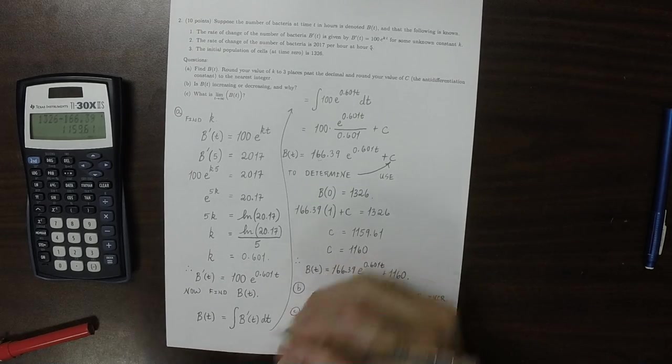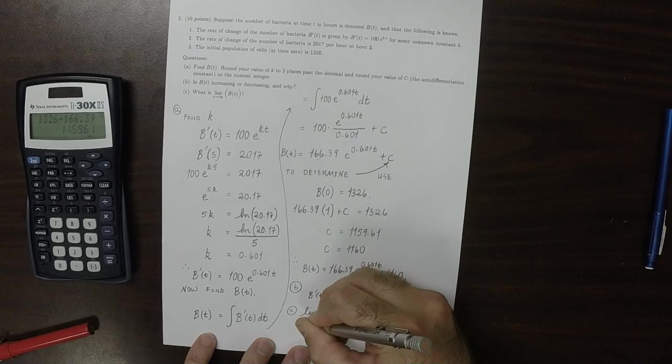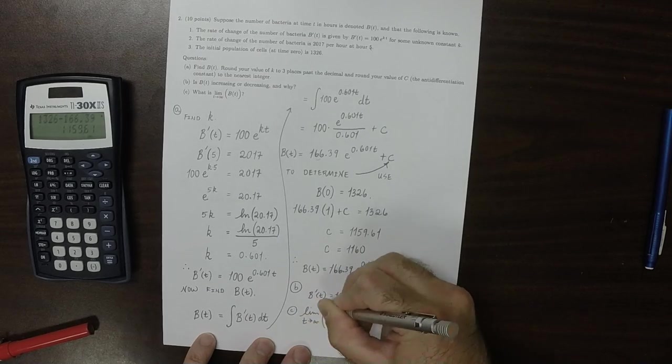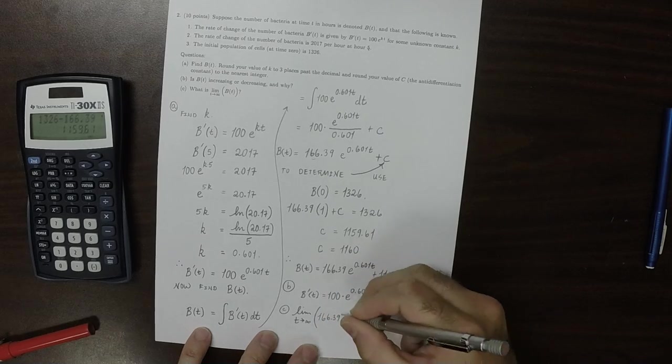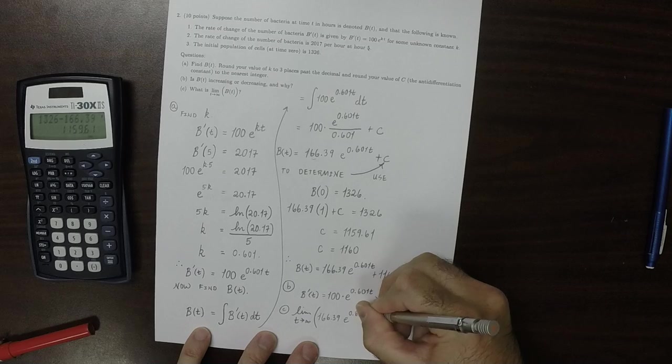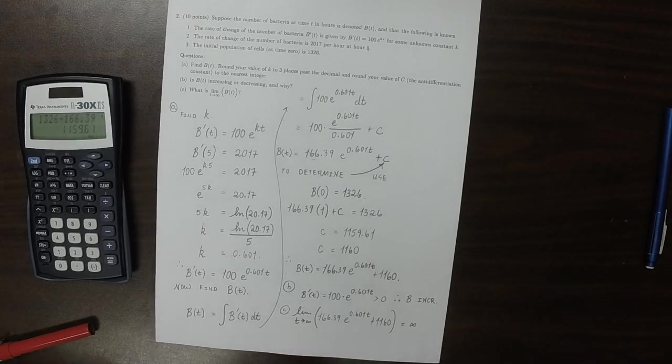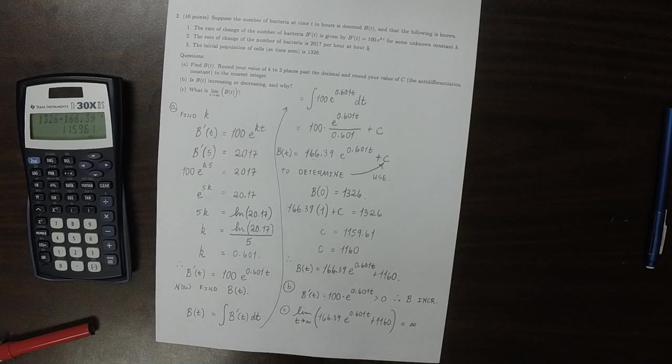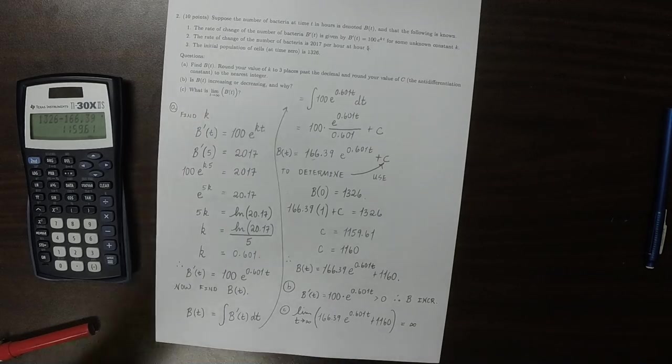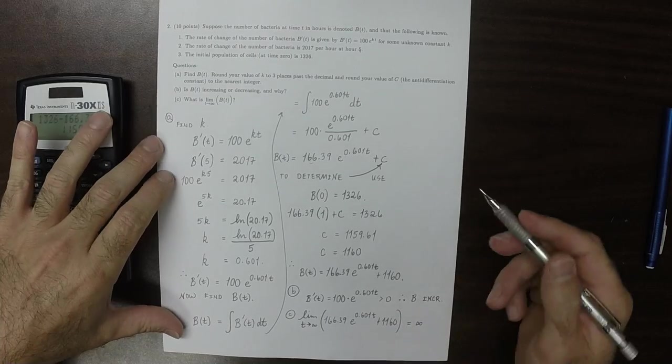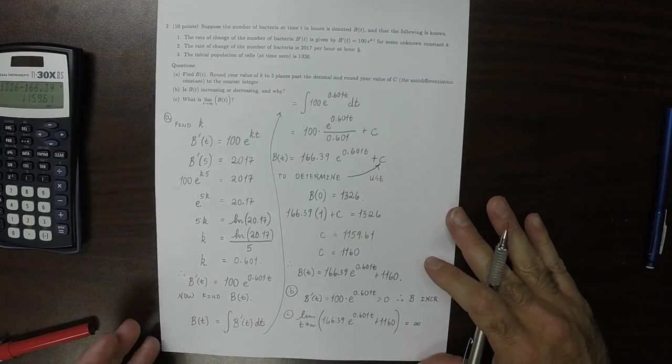And then the answer to part c is what happens as t goes to infinity? Well, the limit as t goes to infinity of this expression, 166.39 exponential 0.601t plus 1160. Well, that's infinite. So that's different from the previous exercise on the homework that this one is modeled after, because the previous one had a finite limit, whereas this one has an infinite limit.